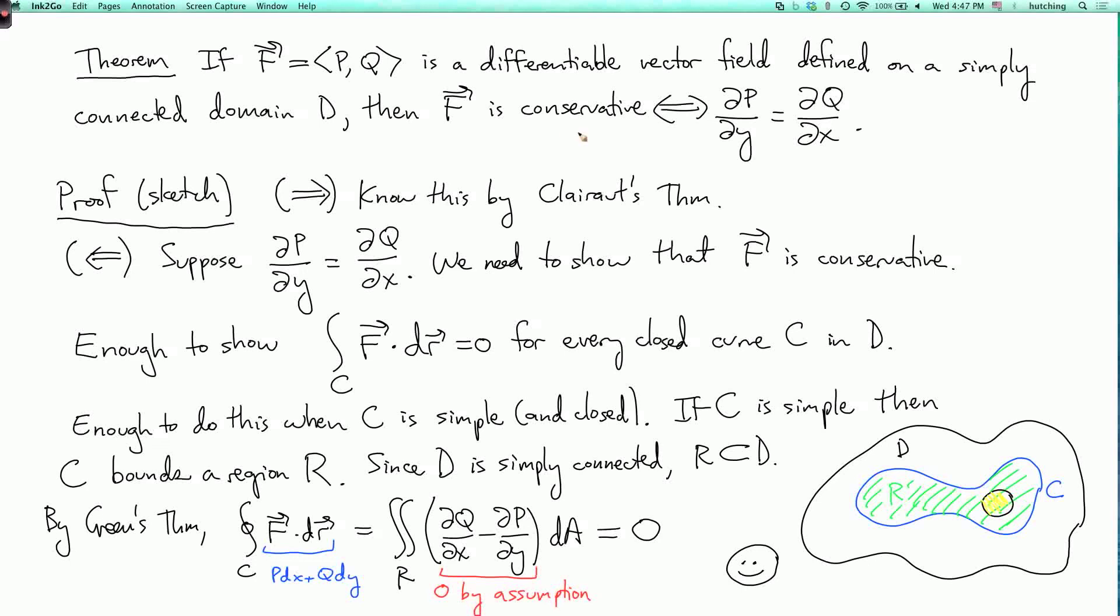Now, if f is conservative, then by Clairaut's theorem, we write f as the gradient of some potential, and then if you look at the second derivatives of that potential, then use Clairaut's theorem, you get this equation. And that's true for any domain, simply connected or not.